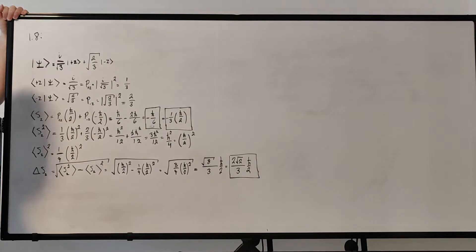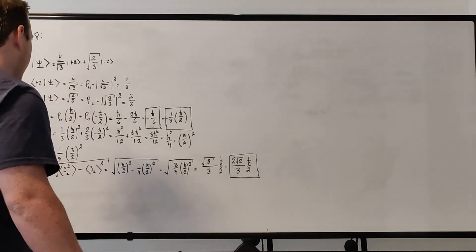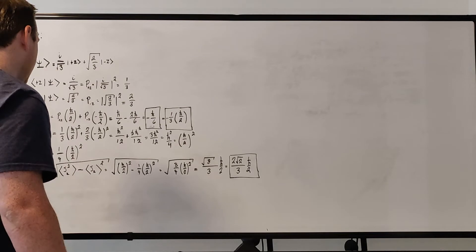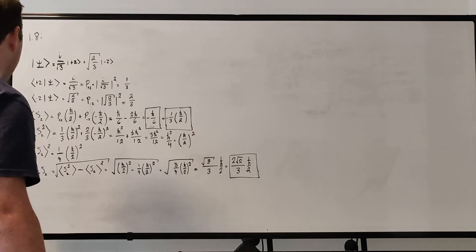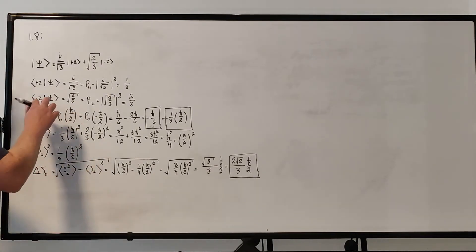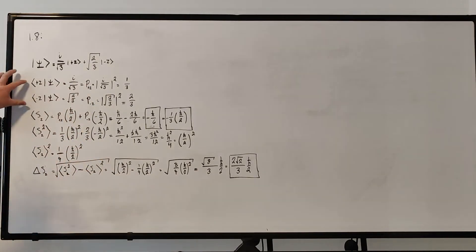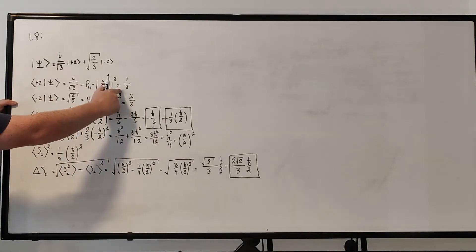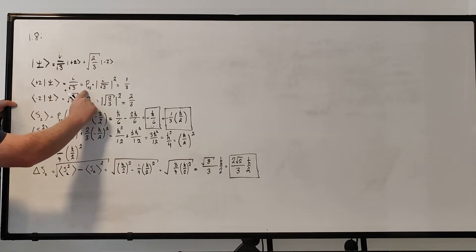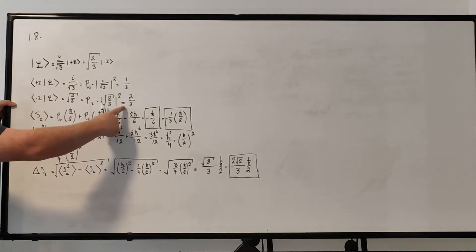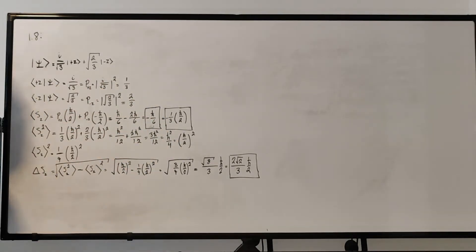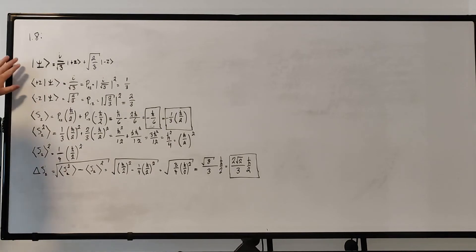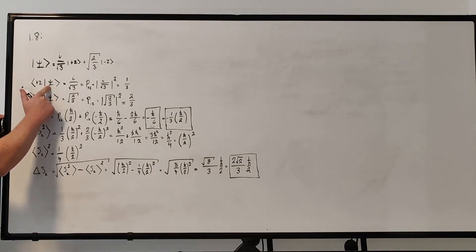Let me just double check that this is correct. Yes, okay. I was looking at this and I was completely missing the fact that I had the probability here. I was like, this inner product is not one-third, this inner product is not two-thirds — that's the probability. I thought I had messed something up, but I just kind of misread my own line there. So, to find the probabilities we need to find these inner products.